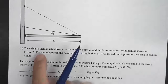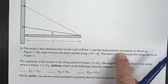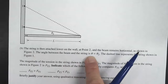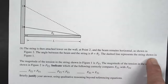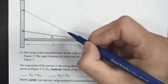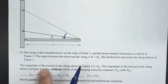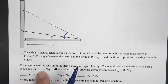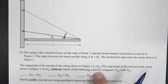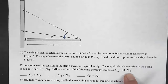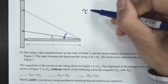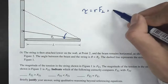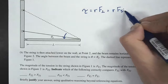Now the string is attached lower on the wall at point 2, and the beam remains horizontal as shown in figure 2. The angle between the beam and the string is now theta 2. The dashed line represents the string from figure 1. Notice that the angle has decreased. The magnitude of tension in figure 1 is FT1, and in figure 2 is FT2.